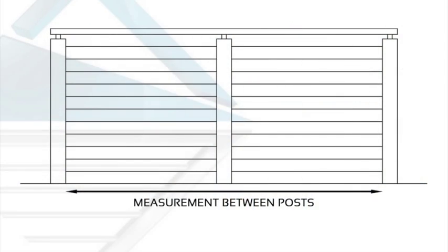Measure the distance between the inside faces of your end posts to determine your section length. Cut your wire 70mm longer than your measured section.